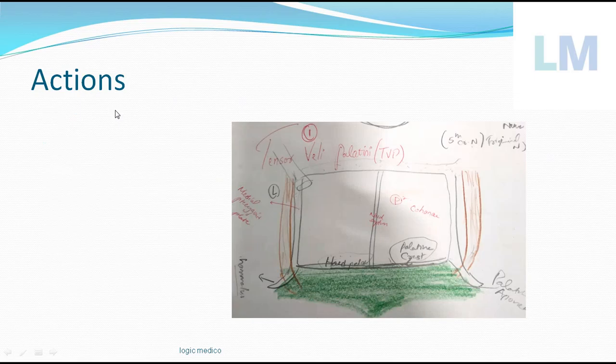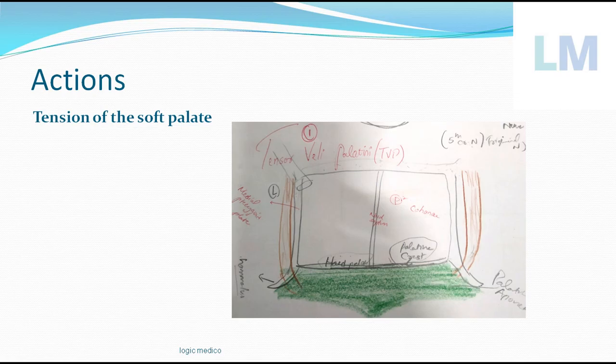What is the action? The name 'tensor veli palatini' gives it away — it creates tension in the soft palate. The options are elevation, depression, tension, or relaxation; the correct answer is tension. It tenses the soft palate so that it becomes like a rigid cardboard-like structure, which goes and anchors between the nasopharynx and oropharynx, cutting off the connection between the two, so that food from the oropharynx during swallowing does not enter the nasopharynx.